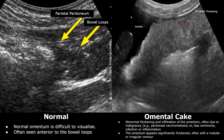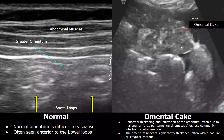Here, we can see an echoic fluid. The thickened omentum usually has irregular or nodular margins. This is how an omental cake appears. Here is another case showing an omental cake — a prominent thick heterogeneous structure is seen, along with ascites.